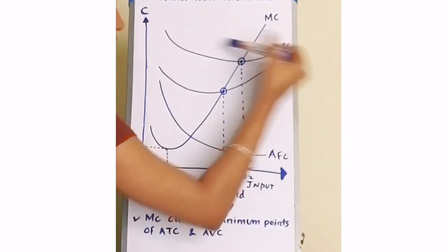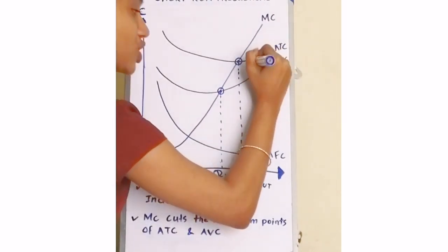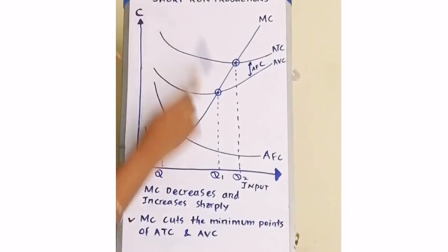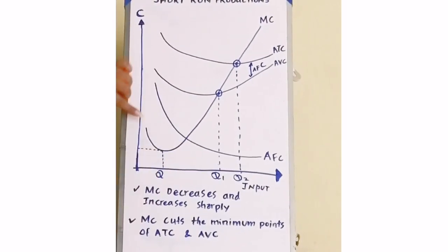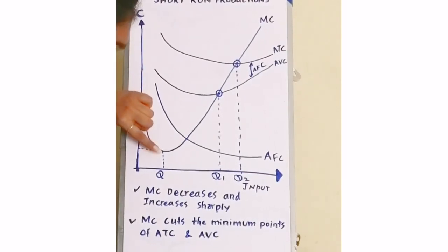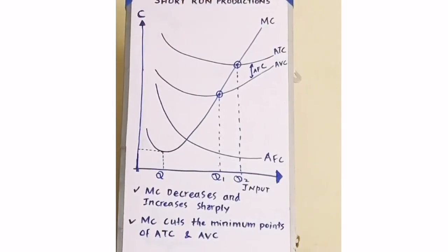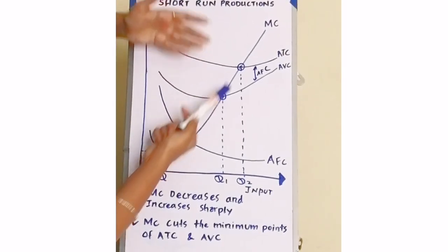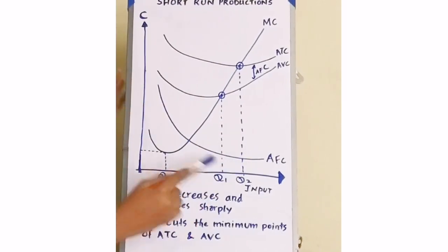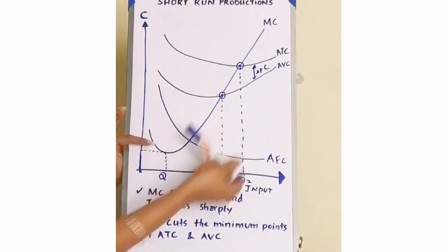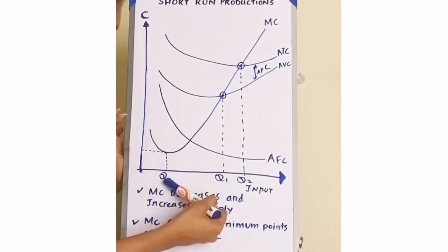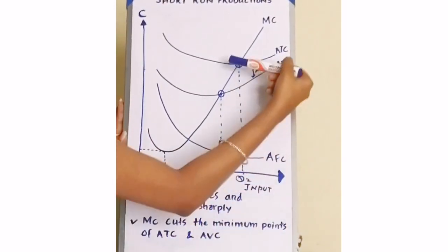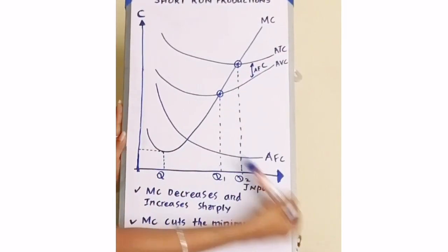The gap between ATC and AVC can also be identified as AFC. The key points to write here are: MC decreases at the beginning and thereafter increases sharply, crossing the minimum points of AVC and ATC. The minimum point of MC occurs at quantity Q, and the minimum points of AVC and ATC occur at quantities Q1 and Q2 respectively.